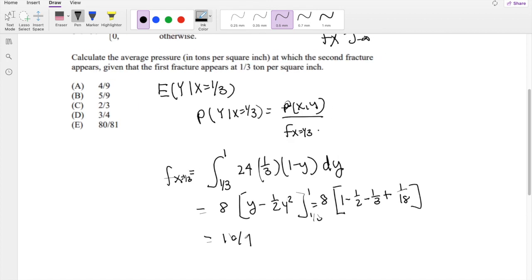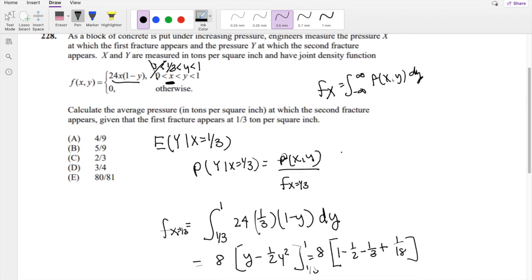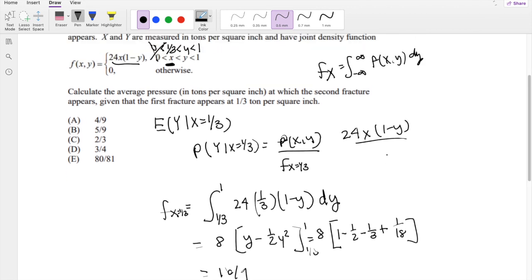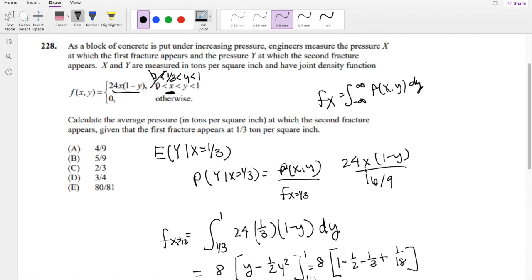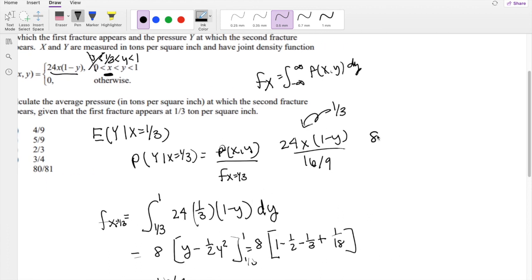The numerator just stays the same. So that's going to be 24X times one minus Y over our denominator, which is 16 over nine. But then we know that X has to be one third, so we can plug that in there. That's eight times one minus Y over 16 in the denominator, and I can bring the nine up. So these cancel out, and you get two in the denominator.